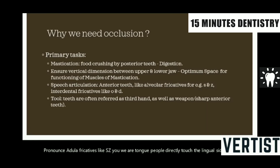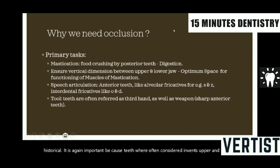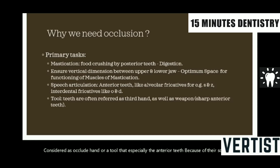Similarly, there are certain fricatives referred to as interdental fricatives, like words with 'th' sounds. In all these pronunciations, we need an interaction between the upper and lower teeth, which is made possible by this occlusion. Historically, occlusion is very important because teeth were often considered, for our ancestors, as a third hand or a tool — especially the anterior teeth, because of their chisel-shaped anatomy, they can be used like a sharp weapon.